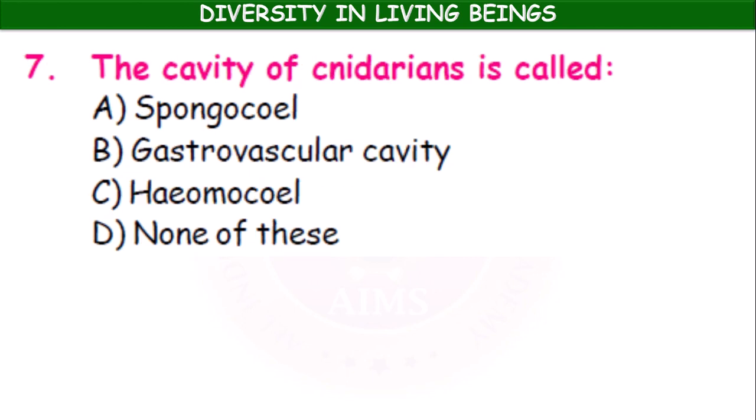The cavity of cnidarians is called the gastrovascular cavity. The gap between the outer epithelium and the inner gut — the intestine — is filled with a cavity called the gastrovascular cavity.